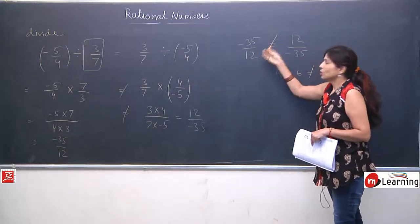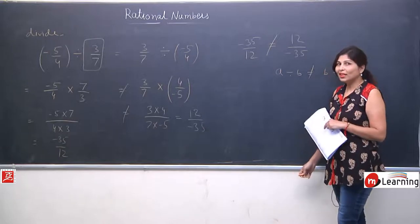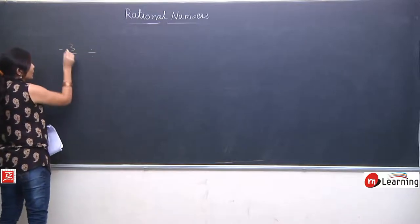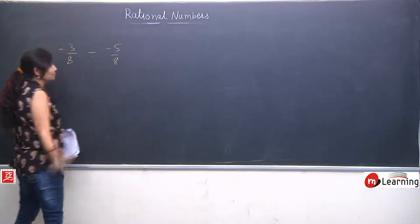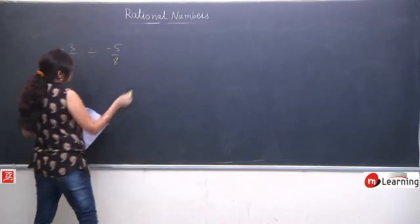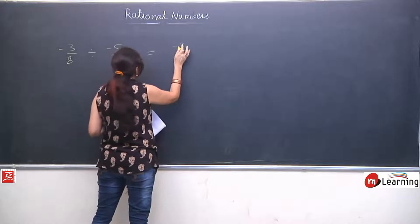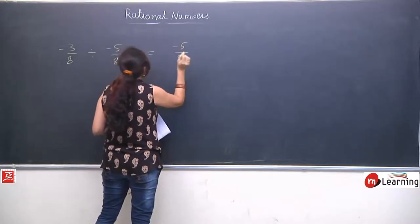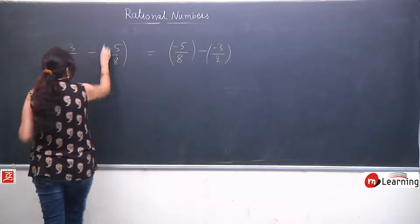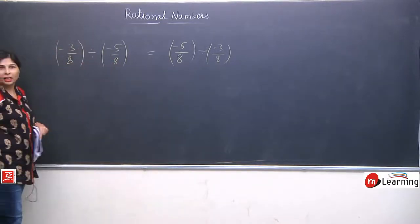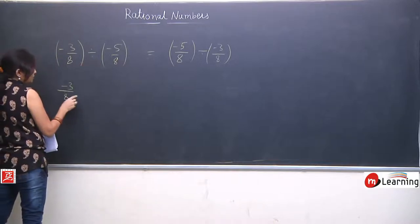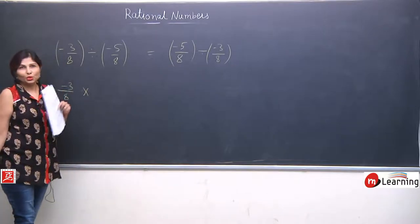Dono jab equal hai nahi hai, to divide kya hua? Commutative law ko follow nahi kar raha. Ek aur practice: I am having 3 by 8 and minus 5 by 8. Mujhe commutative property laga ke check karna hai ki it is following or not. Hame pata hai ki wo equal nahi aayega, because divide never follows commutative property.